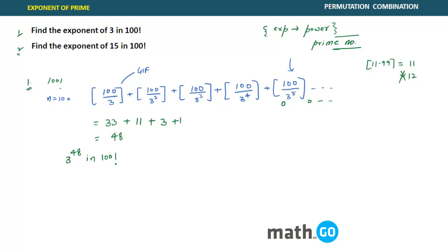Let us apply this in the second problem. It says find the exponent of 15 in 100 factorial. For 15, how you find it? 15 is nothing but 3 into 5. You already know what is the power of 3 in 100 factorial, so 3 is getting repeated 48 times.